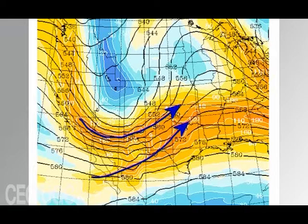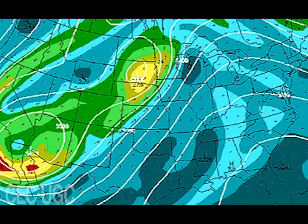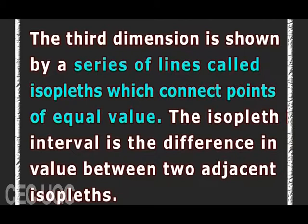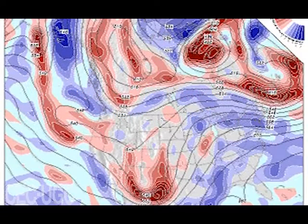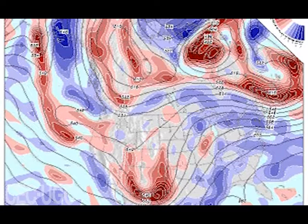Isopleth maps are used for mapping amounts of precipitation, atmospheric pressure, and numerous other measurements that can be viewed statistically as a third dimension. The third dimension is shown by a series of lines called isopleths, which connect points of equal value. The isopleth interval is the difference in value between two adjacent isopleths. Note that the values of the isopleths drawn on the map are always multiples of the interval, and isopleths never cross or divide — they always form enclosed circles. I hope you found this lecture quite useful. Thank you.